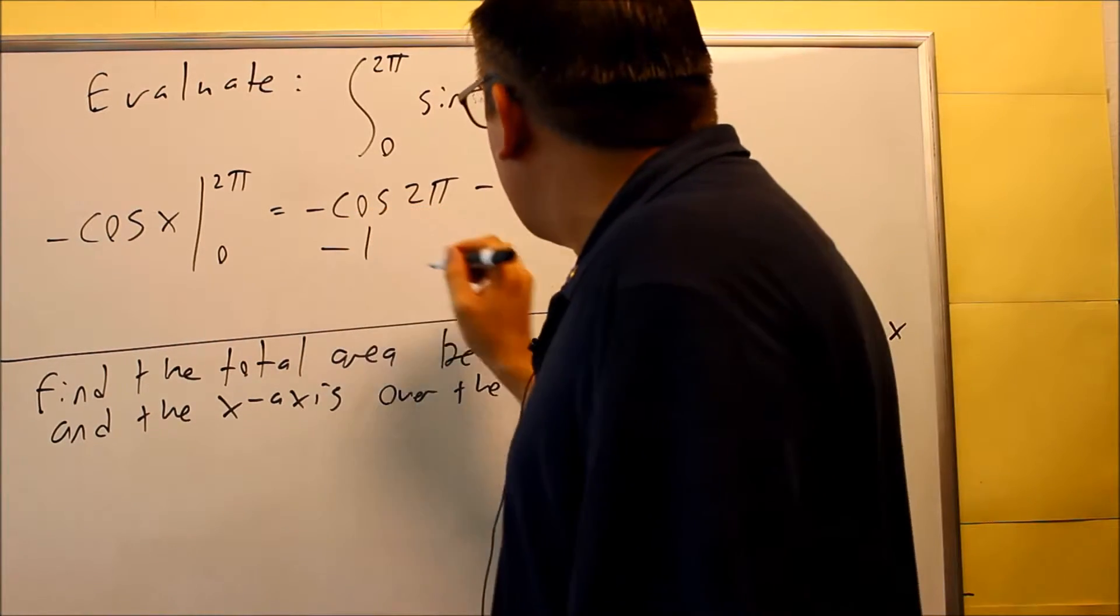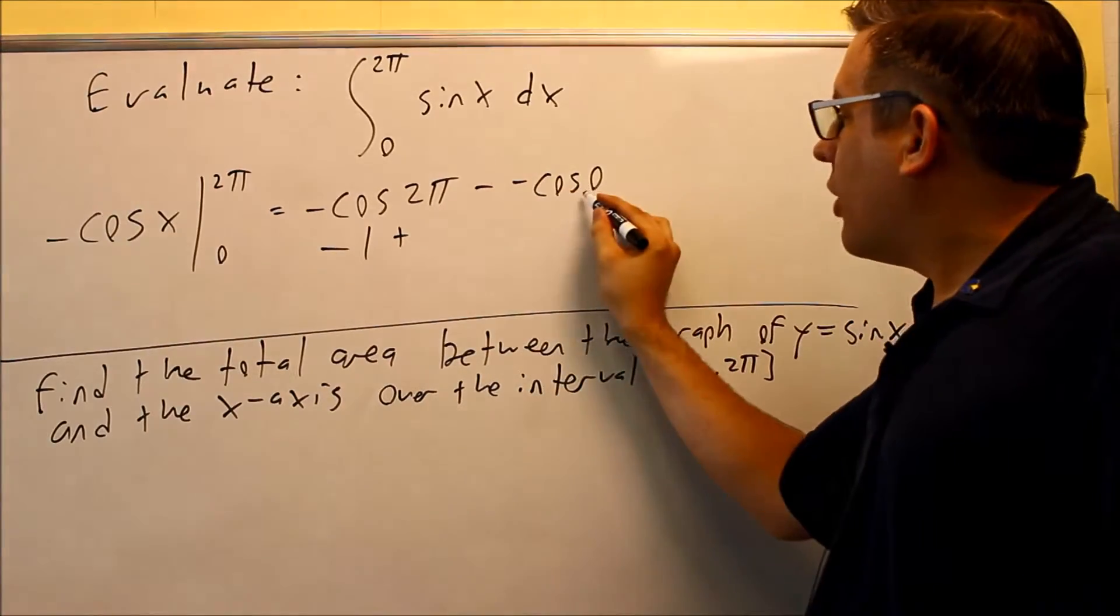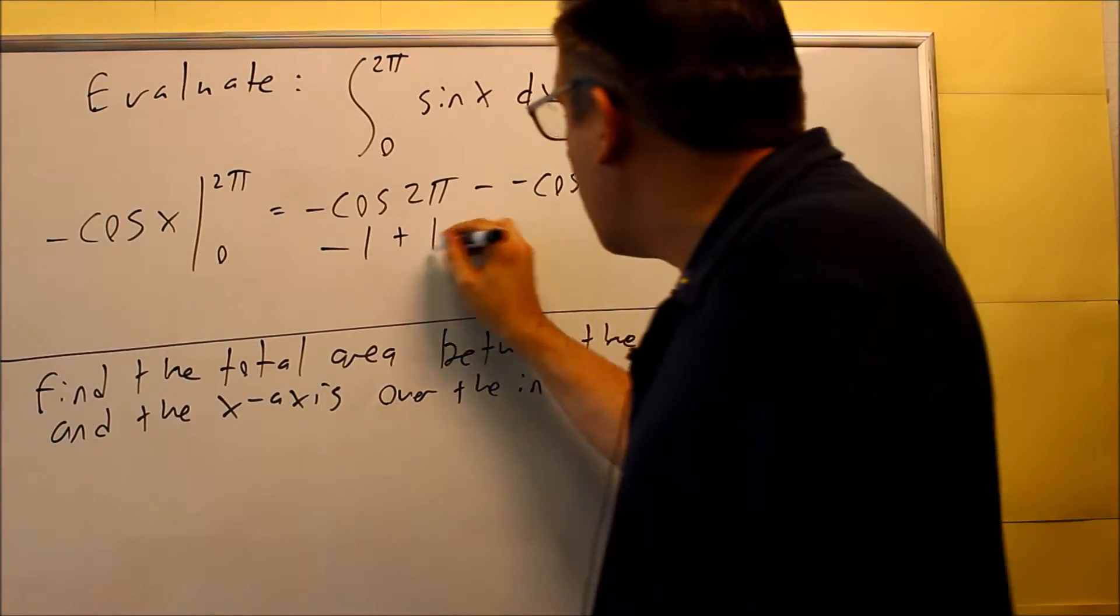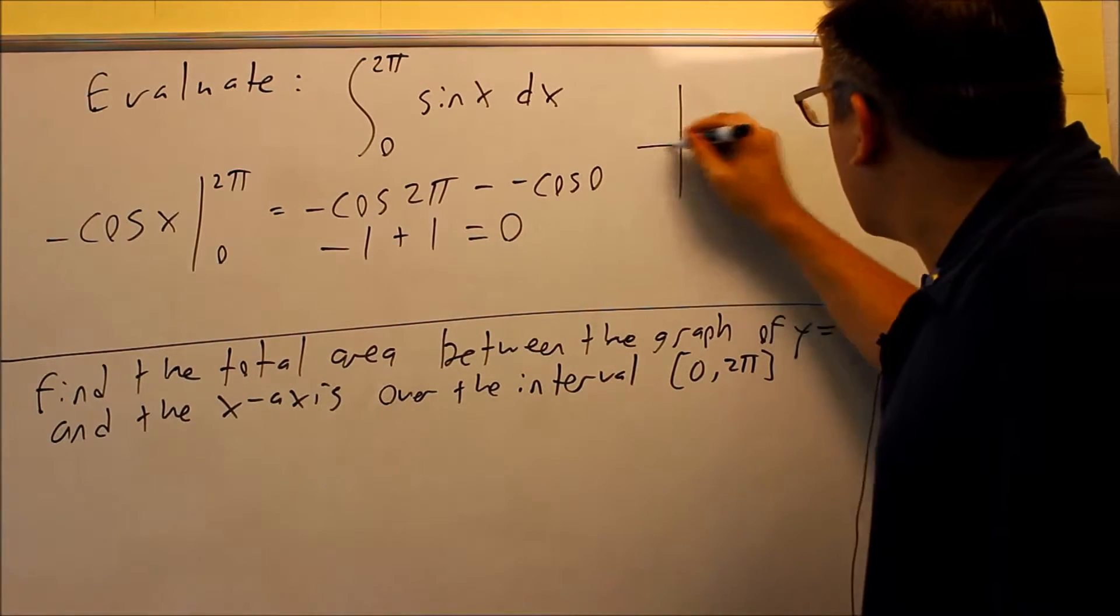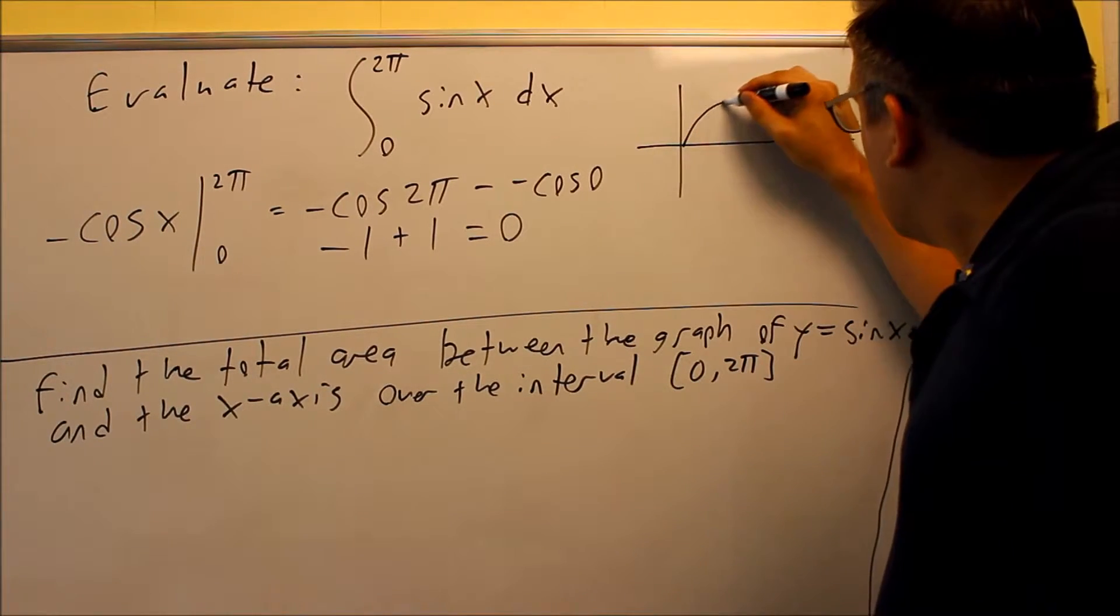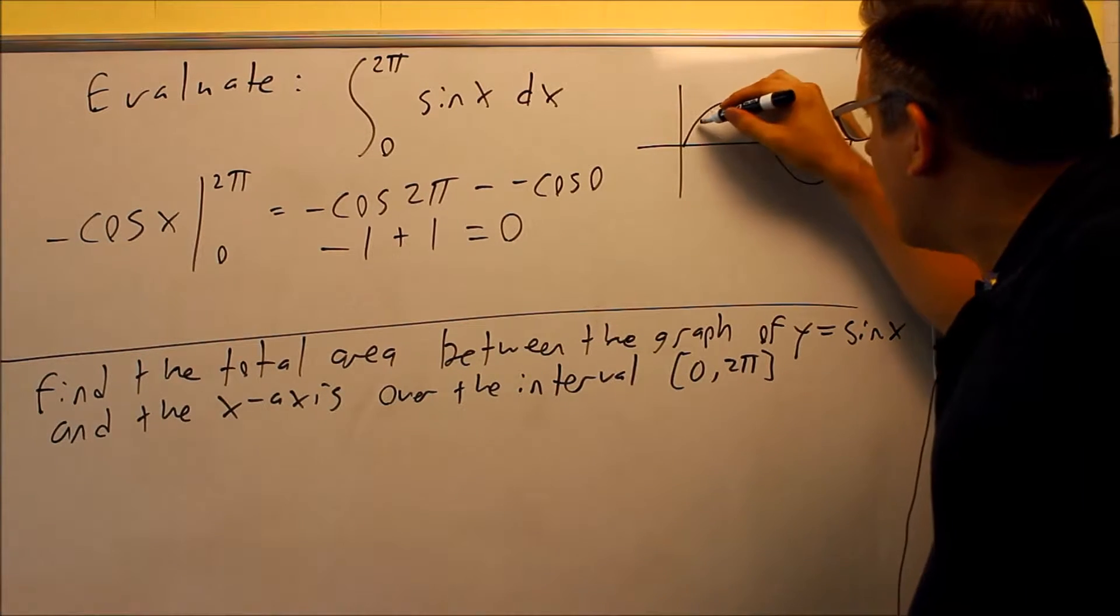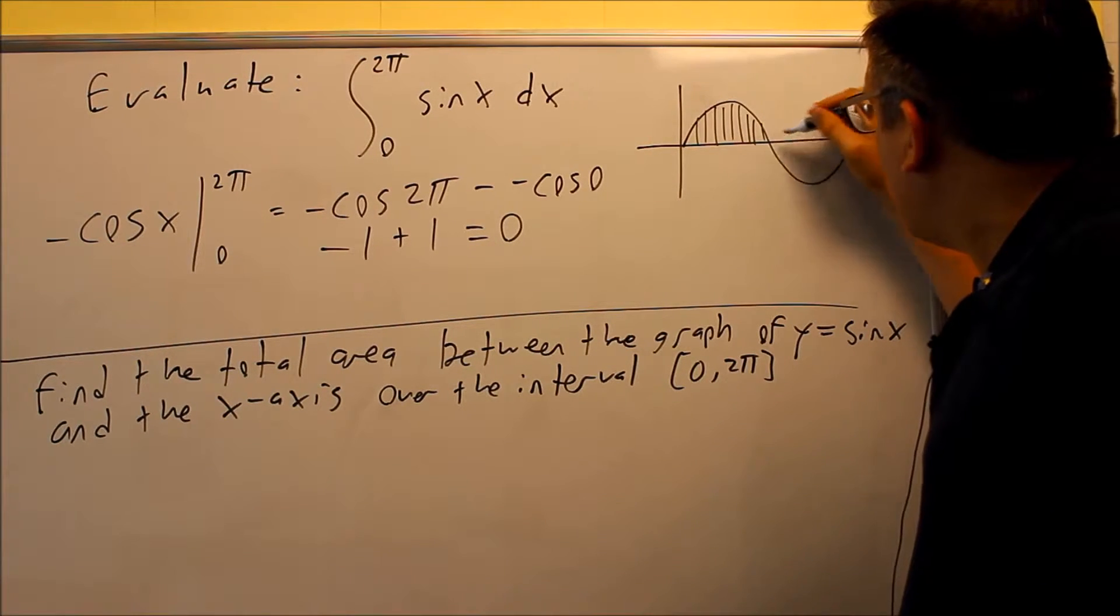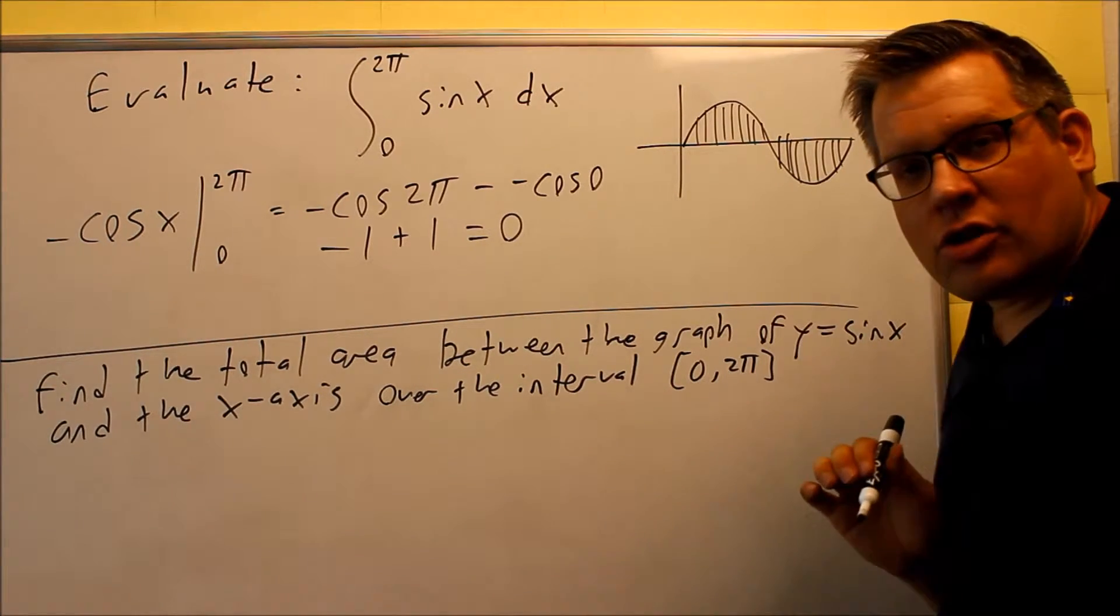Cosine of 2π, that's going to give you negative 1, and I have plus the value of cosine 0, that's also 1, and we get a 0. If you wanted to take a look at the graph here, then what it looks like between 0 and 2π is this. You've got some area above and you've got some area below, and they're canceling each other out.